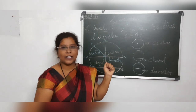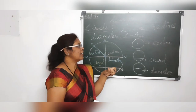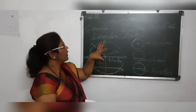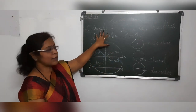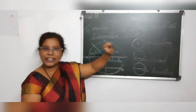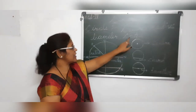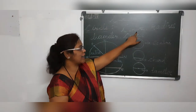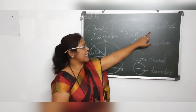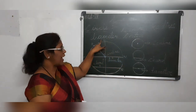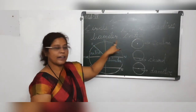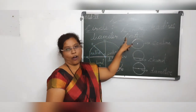What are the parts of the circle we are going to learn? So the things which we are going to learn in this session are: center, radius, diameter, and chord.